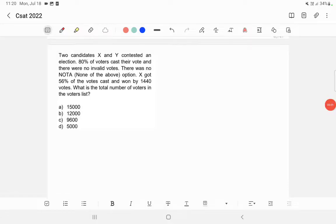Two candidates X and Y contested an election. 80% of voters cast their vote and there were no invalid votes. There was no NOTA option. X got 56% of the votes cast and won by 1440 votes. What is the total number of voters in the voters list?